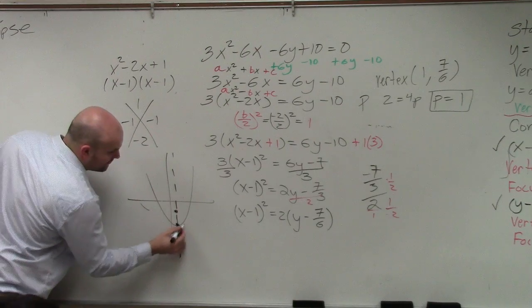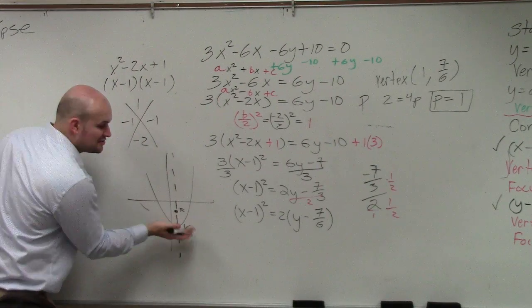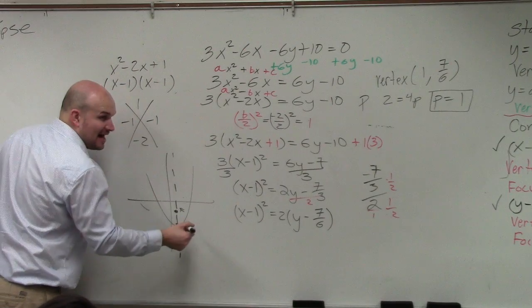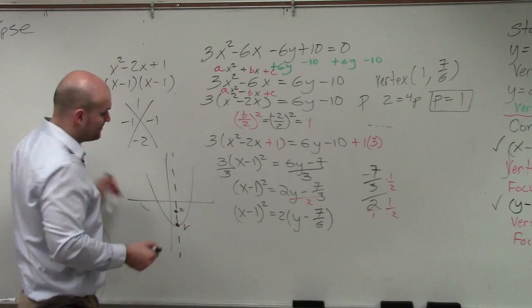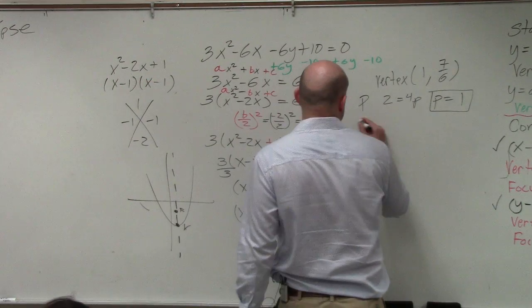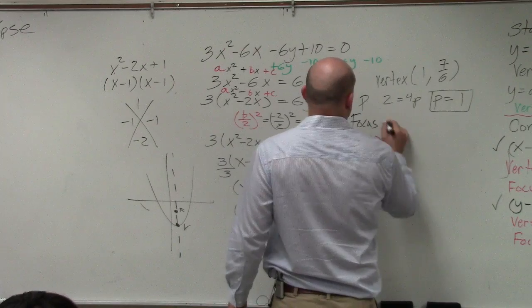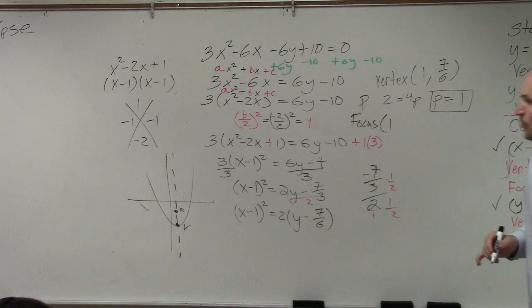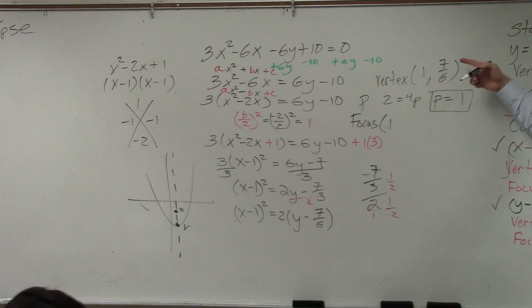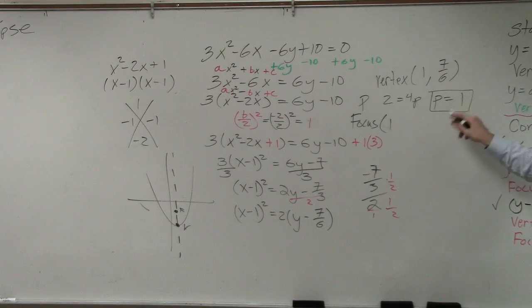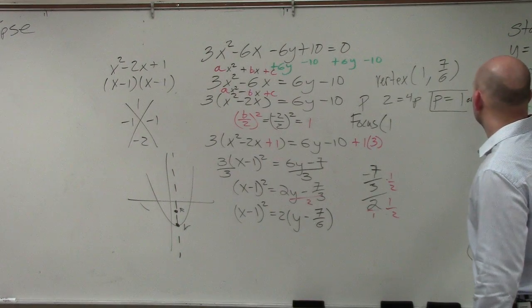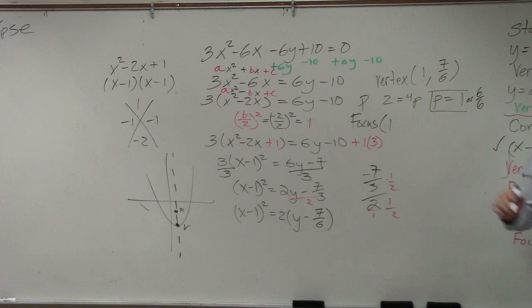But what I want you guys to understand is here's your vertex, here's your focus. So the x-coordinate of my focus is going to be the same x-coordinate as my vertex. So therefore the only thing that's changing is the y-coordinate. So to find the focus, I'm going to take my vertex, which is 1. The x-coordinate is 1, and I'm just going to add 6/6. Would you guys agree with me? 6/6 is the same thing as 1. That's the distance of p, or 6/6.